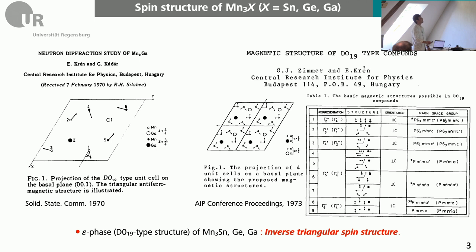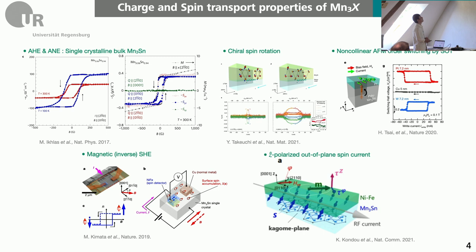The two spin configurations are equivalent in terms of symmetry and also energetically degenerate. All spin structures lie on the basal plane, not pointing along the C axis. From this particular material you can have anomalous Hall effect, inverse Hall effect, magnetic spin Hall effect, and also perpendicularly polarized out-of-plane spin current.